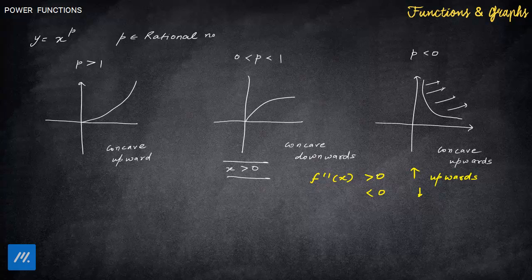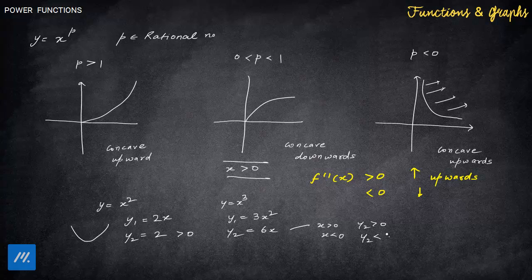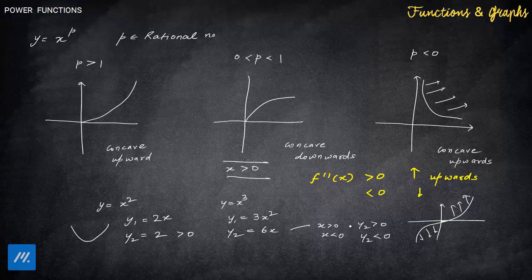Let's verify with x squared. The first derivative y₁ is 2x, and the second derivative y₂ is 2, which is always positive — that's why x squared is always concave upward. Now for y equal to x cubed: y₁ is 3x squared, y₂ is 6x. For x greater than 0, y₂ is positive; for x less than 0, y₂ is negative. That's why x cubed changes its concavity — it's concave downward for x<0 and concave upward for x>0.